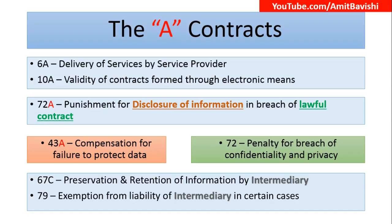Now, Section 72: in 72A the information was acquired by Lawful Contract, but in 72 the information is acquired because of the Act — the Information Technology Act. Section 72 deals with penalty for breach of confidentiality and privacy by the person who acquired the information under this Act. So if information is acquired because of the IT Act and such information is disclosed, breaching confidentiality and privacy, then Section 72 will be applicable. 72A is for a particular Lawful Contract.